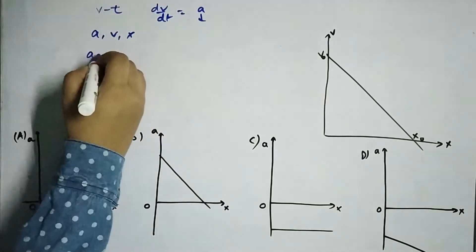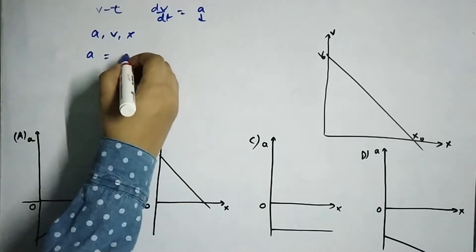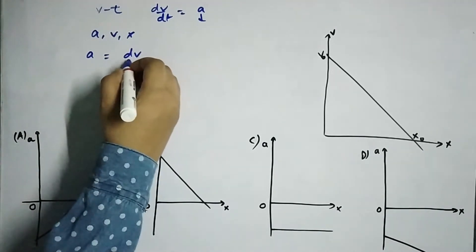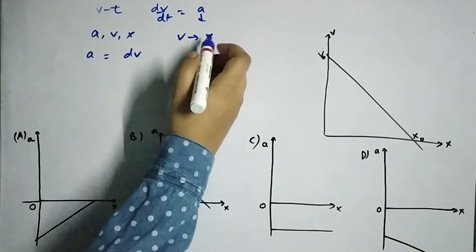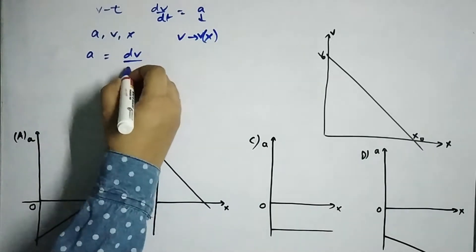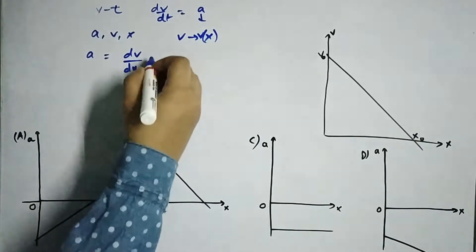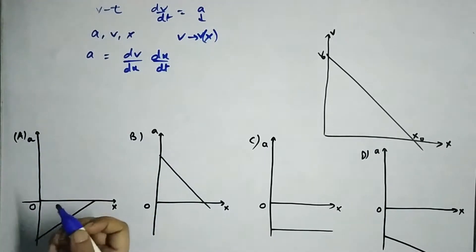So we can do one thing, some of you might know this relationship or we can derive it again. So if v is a function of x as in this case, so v were differentiated first with respect to x and then x will be differentiated with respect to t. This is just a chain rule, simple.